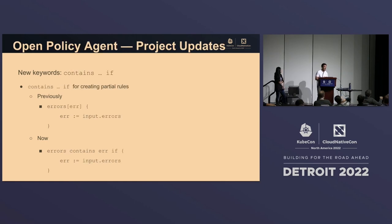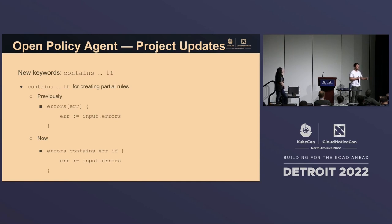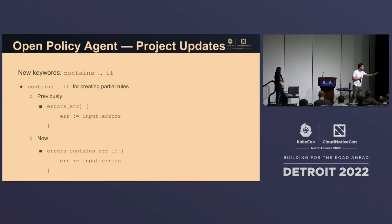We also have the `contains` keyword, which partners with `if`. When writing a rule, you might create a list of deny reasons — this is called a partial rule because it doesn't have an exact answer; it collects a bunch of answers into an object. Previously you'd collect errors from input and shove them into a list; now you use `contains`: `errors contains err if that exists`, inputting it into the partial set.